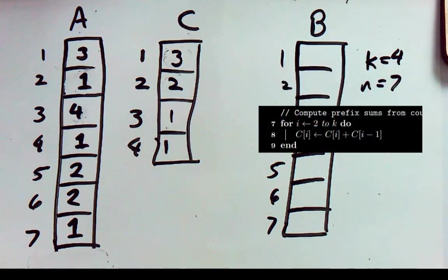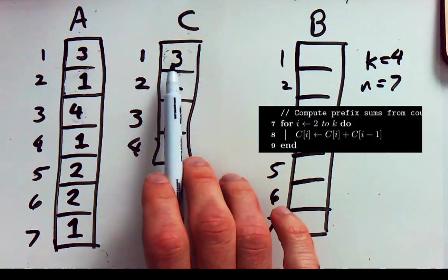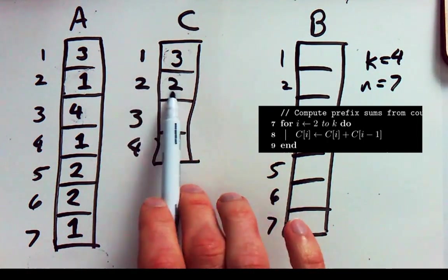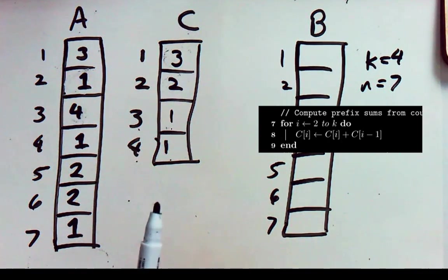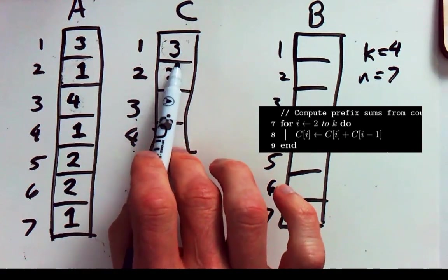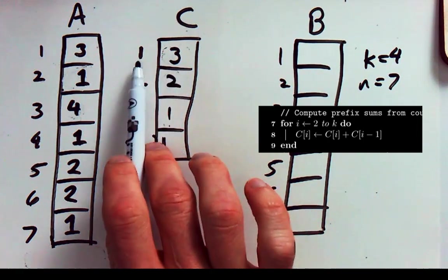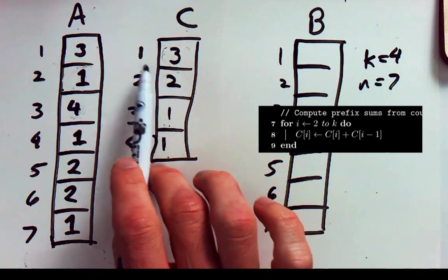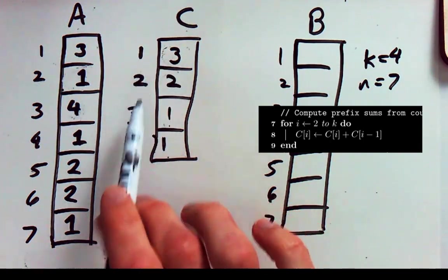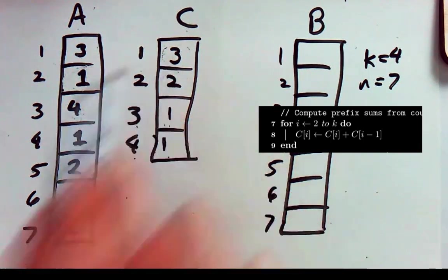The third phase of our algorithm transforms what these mean. Currently they're counts. We've seen 3 1s, 2 2s, 1 3 and 1 4 in our input. Now we're going to transform this to represent where the last of a particular value would be. So we want this first box to represent where the last 1 will go in our array. So if we've got 3 1s the final 1 will go at index 3. So we'll leave that box alone.